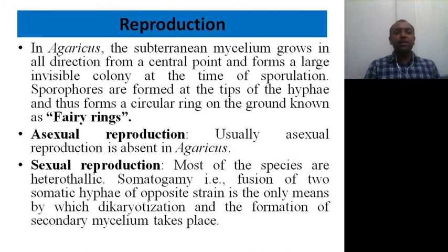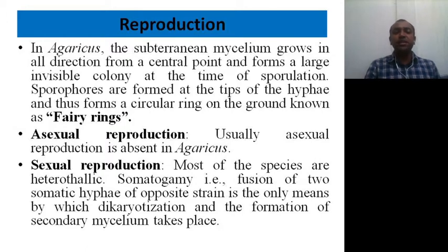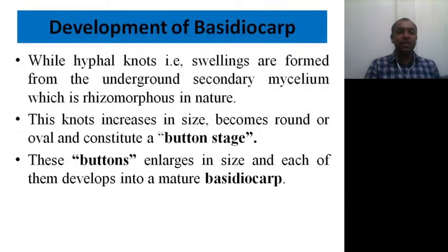Please keep in mind that asexual reproduction is usually absent in Agaricus. Sexual reproduction here involves somatogamy — that is, fusion of two somatic hyphae of opposite strains — and this is the only means by which dikaryotization and the formation of secondary mycelium takes place. That is basically the plus and minus strains discussed previously.